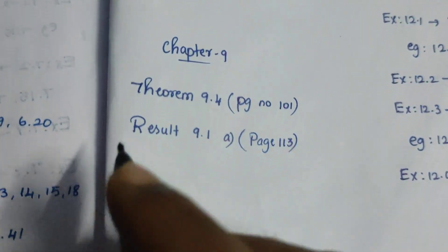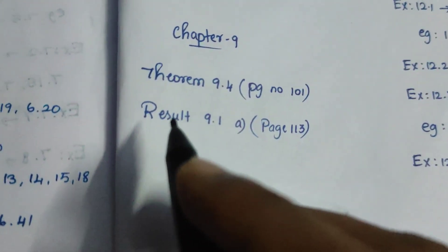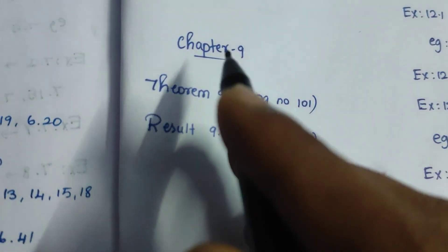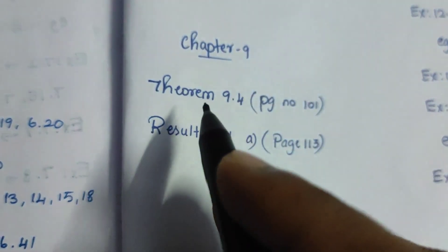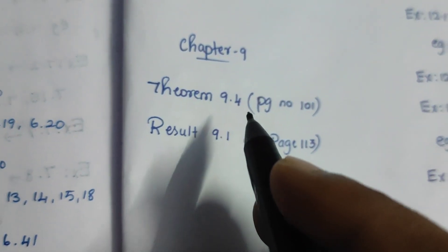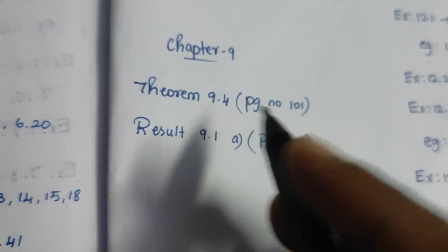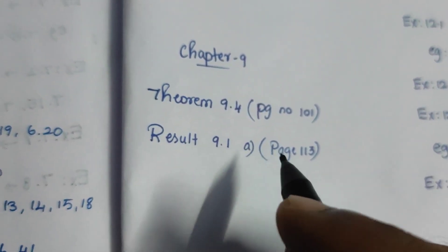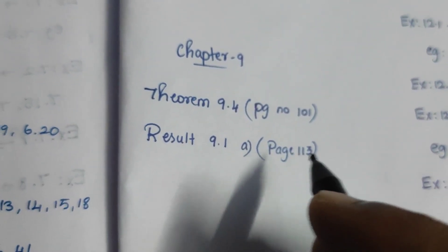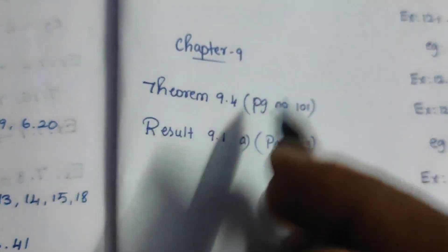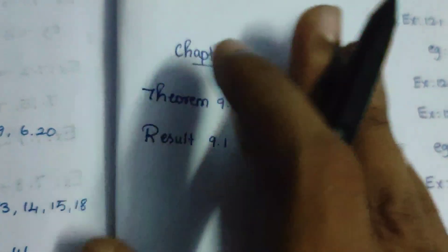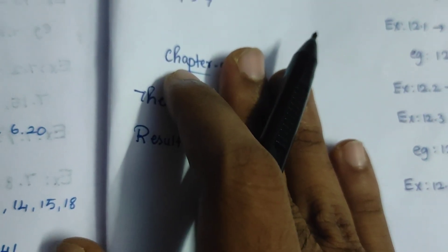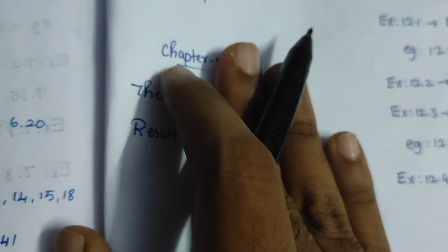So the 9th chapter — I think the theorem is full. Chapter 9, the theorem is 9.4, page number 101. Result 9.1 is page number 102. The 9th chapter is skip. But how do you say? 5 mark or 7 mark.